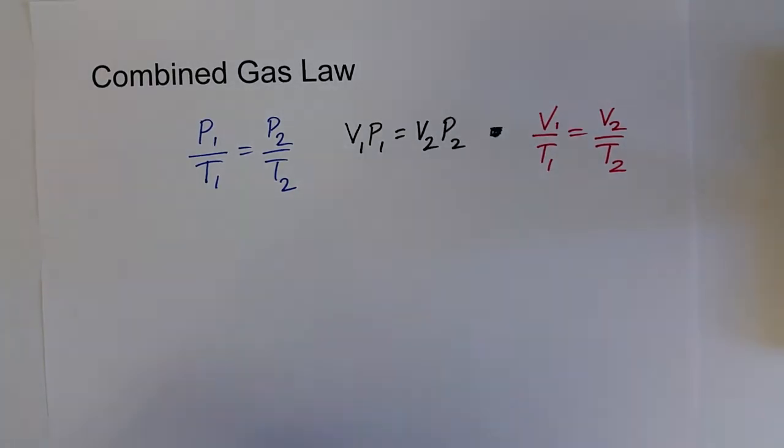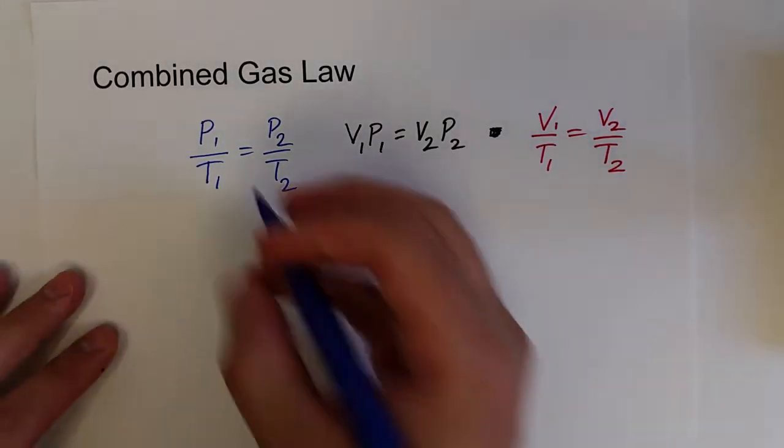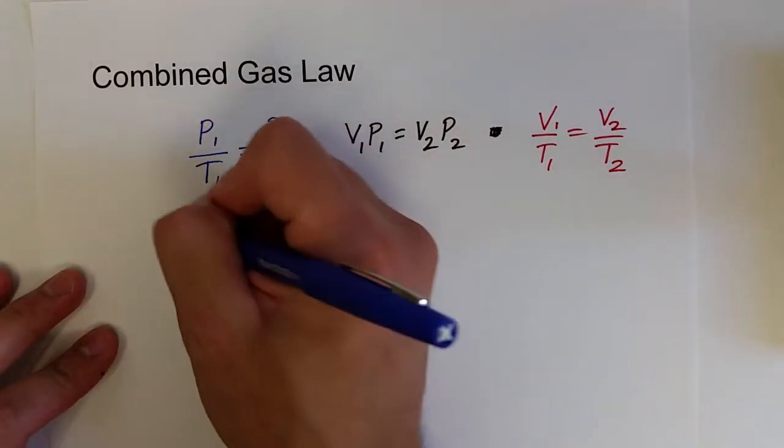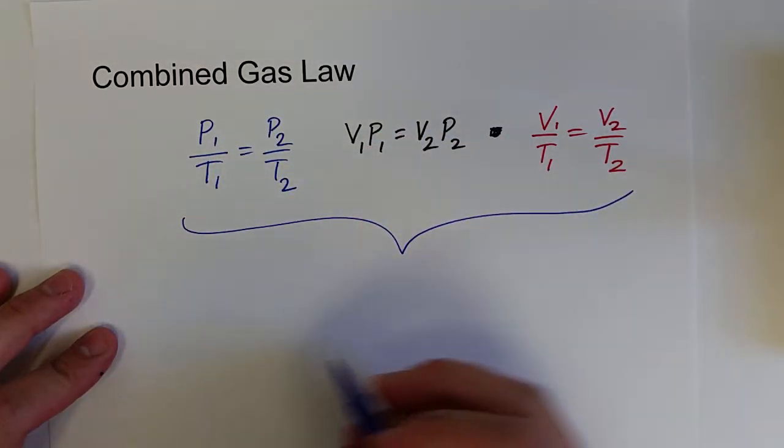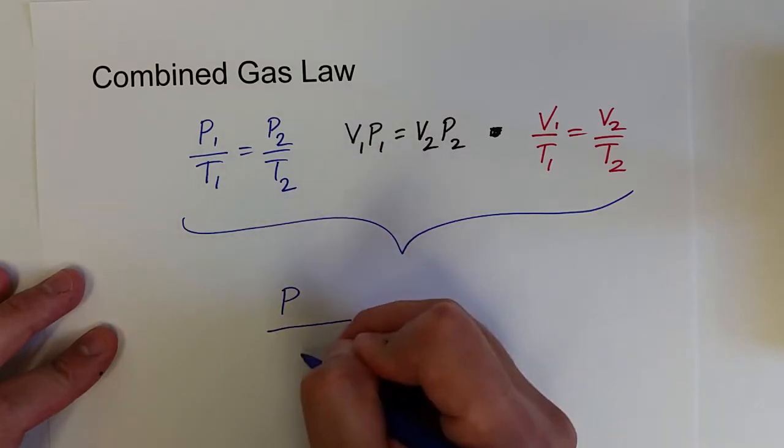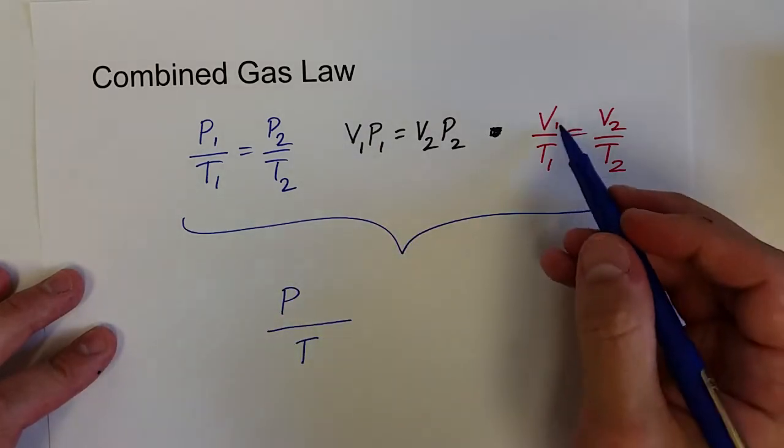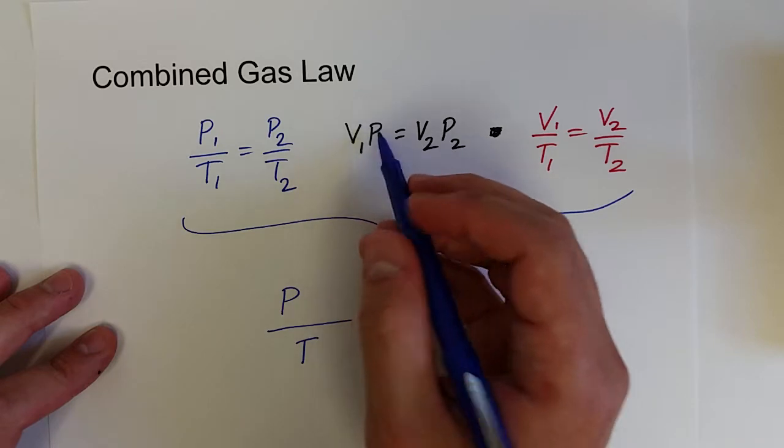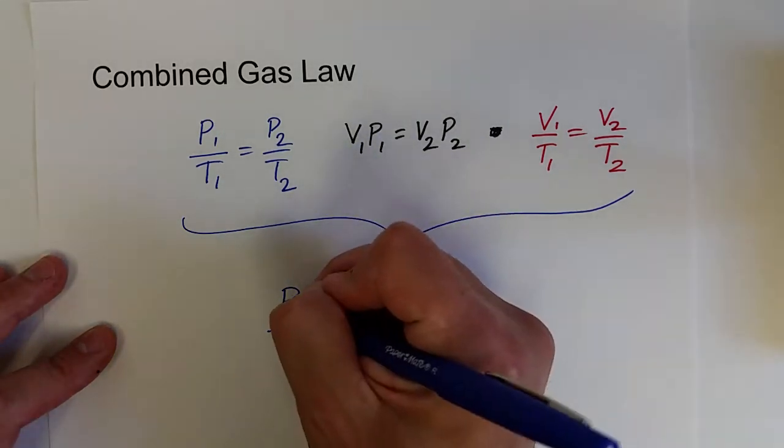And so what we can do is we can combine all these three relationships into one function known as the combined gas law. So pressure over temperature and volume over temperature and volume times pressure all give us the same function.